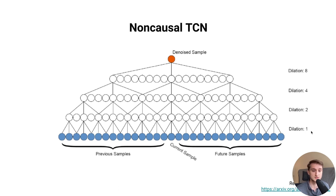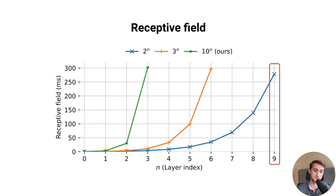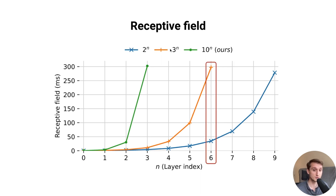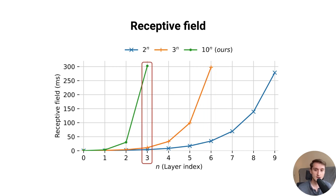The TCN uses dilation factors that grow as a power of 2, which efficiently increases the receptive field. In our past work, we needed 10 layers to get a receptive field of about 300, which was the threshold for good performance. Using a power of 3 gives the same receptive field in just 6 layers, but that still wasn't enough for real-time operation. So we went to the extreme of a dilation factor growing as a factor of 10, producing the same receptive field using only 4 layers — achieving real-time operation by making the network much shallower and more efficient.